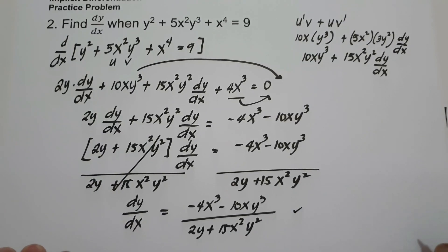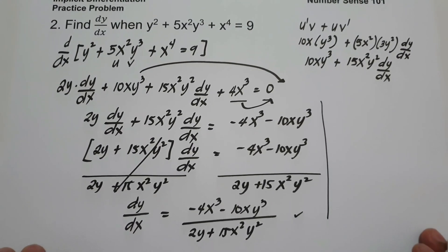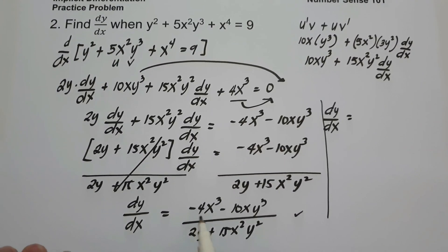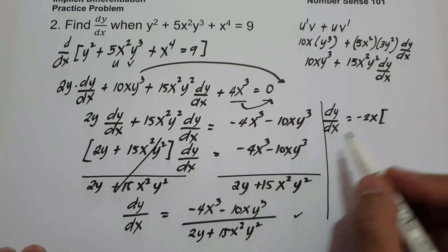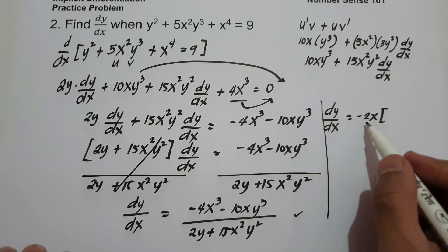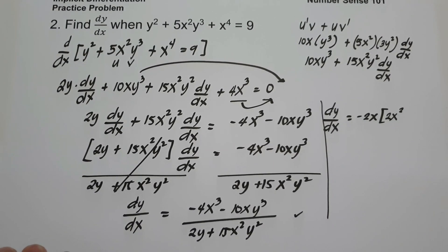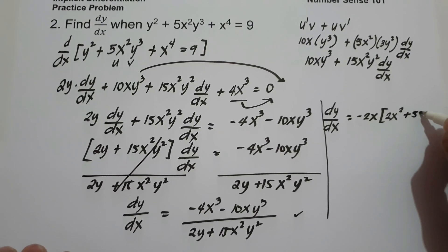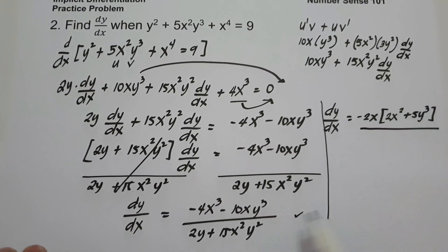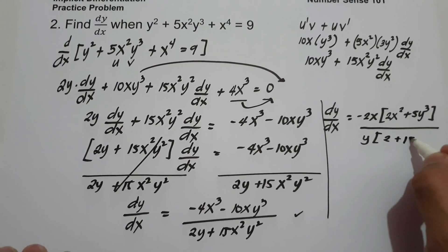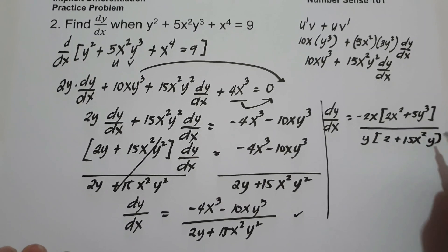If you want to simplify the answer, the greatest common factor of negative 4 and negative 10 is negative 2, with variable x. Negative 4x cubed divided by negative 2x is positive 2x squared, and negative 10xy cubed divided by negative 2x is positive 5y cubed. On the denominator, factoring out y leaves 2 plus 15x squared y. And this will be our answer.